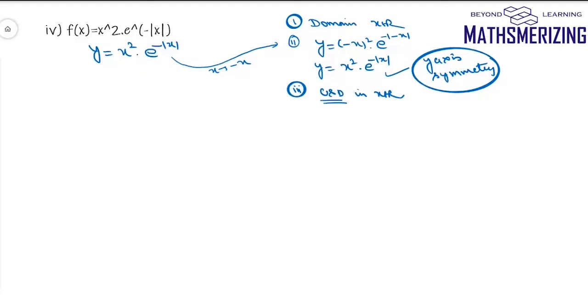Now the third thing is, we need to discuss its continuity and differentiability. Now it is continuous and differentiable and x belongs to r. Actually, I need to check the differentiability at 0 because we do have mod of x. But then, when you'll find left-hand derivative and right-hand derivative, you'll find that it is differentiable at x equal to 0.